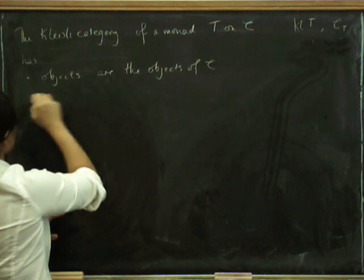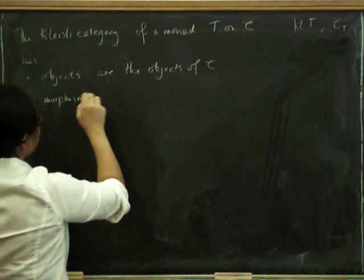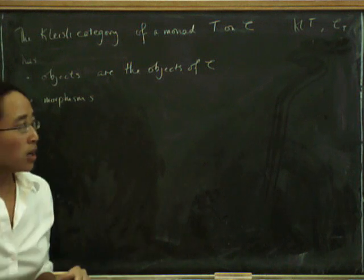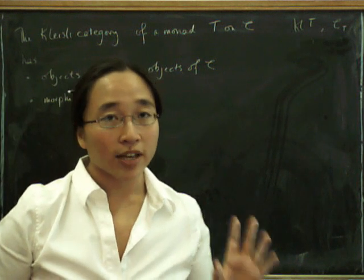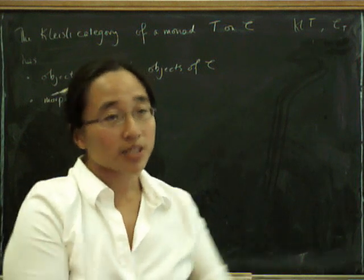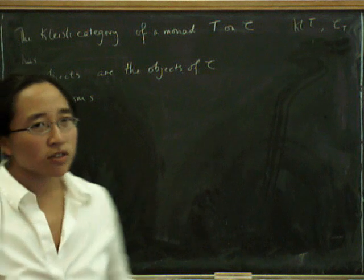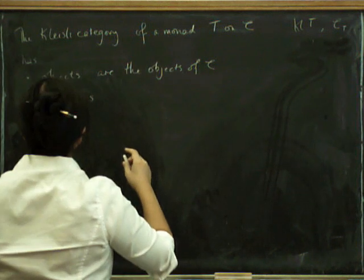What are the morphisms? Well, the morphisms are obviously going to be a bit more exciting. For the Eilenberg-Moore category, it was a little bit more complicated to define the objects, and very much less complicated to define the morphisms. This time it's the other way around. This is sort of one of those conservation of complicatedness things. The complicatedness has to be somewhere.